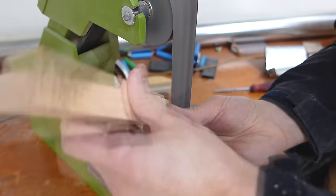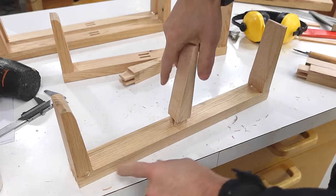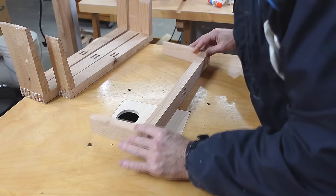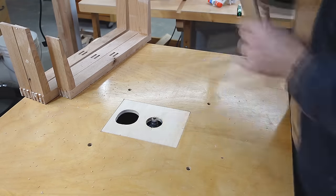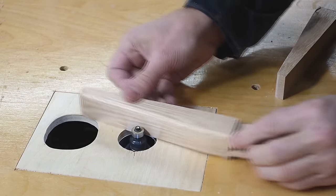I was about to glue in the middle shelf support but then I realized before I put that in I should put round overs on all these edges first. And that middle shelf support also gets some round overs.